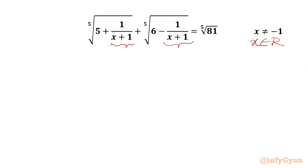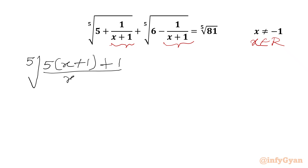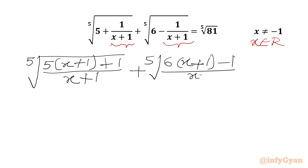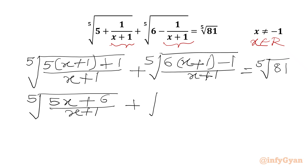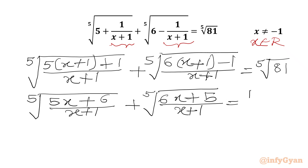Now I will consider the LCM of the radicands only. So we will write: fifth root of (5x + 1 + 1) in the numerator and (x + 1) in the denominator, plus fifth root of (6x + 1 - 1) in the numerator and (x + 1) in the denominator, equal to fifth root of 81. Simplifying the numerators: we get fifth root of (6 over x+1) plus fifth root of (6x + 5 over x + 1) equal to fifth root of 81.